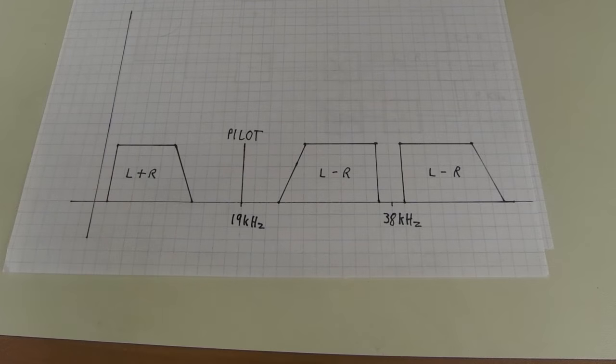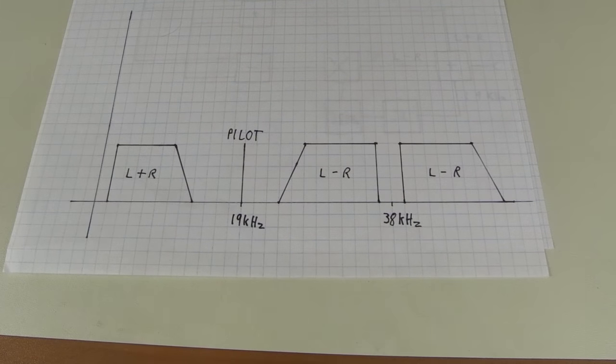So with this easy, super easy technique, you're able to encode stereo information in a signal and yet preserve the backwards compatibility to old mono sets.